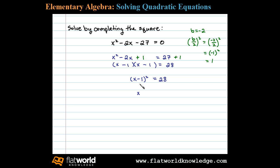In other words, take the square root of both sides. Don't forget the plus or minus. We have x minus 1 equals plus or minus the square root of 28. Now 28 is 4 times 7, so we can simplify that.